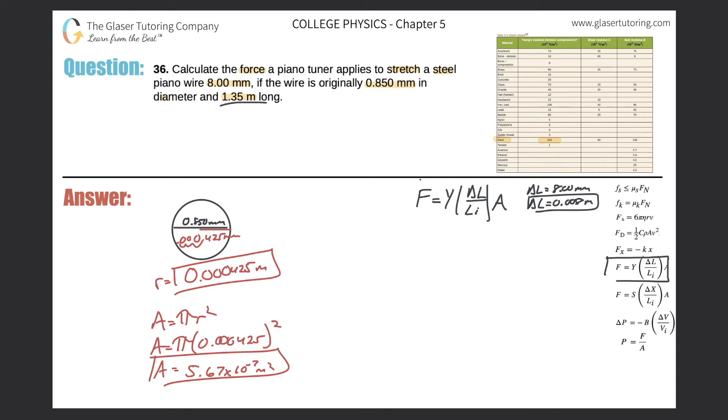So guess what, ladies and gentlemen, we got everything we need. So let's just plug it all in. So the force will be equal to the Young's modulus value of 210 times 10 to the ninth, multiplied by the change in length. In terms of meters, that was 0.008 divided by the initial length, 1.35 meters long. And the cross-sectional area we just found was 5.67 times 10 to the minus 7. So 210 times 10 to the ninth times 0.008 times 5.67 times 10 to the minus 7, divided by 1.35. And it works out to be 705 or 706 newtons. All right, that is the force applied by the piano tuner.